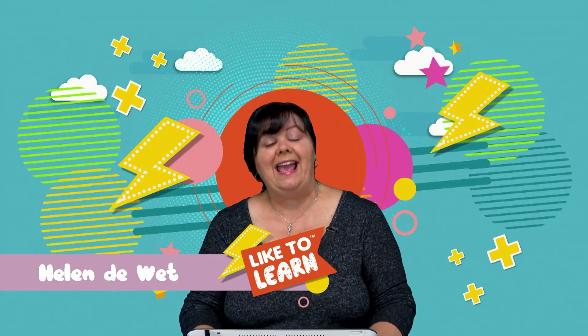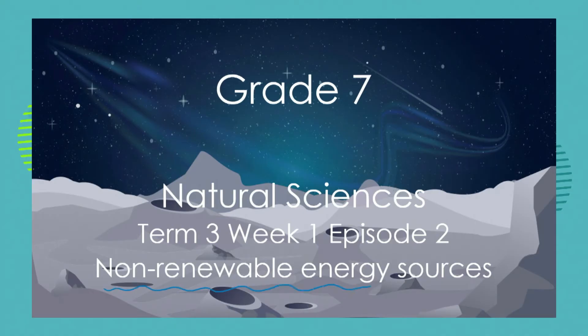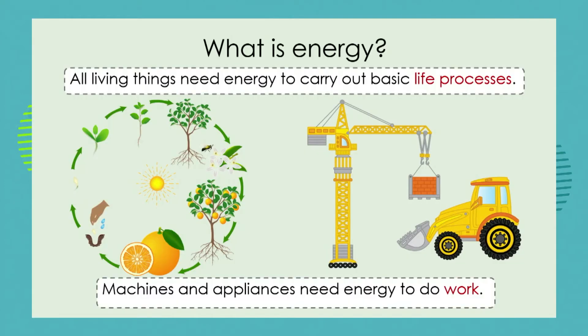Hello Grade 7s, I'm Helen and this is your natural sciences lesson. Remember in our last lesson we introduced you to this very strange concept of energy, and what our focus is today is to look at non-renewable energy sources. We know that all living things as well as machines and appliances all need energy to carry out basic life processes like growth, reproduction, and movement, and all of this we call work. We can't do work or bring about action if we don't have energy, and energy is quite a difficult concept to get your minds around because you can't see it.